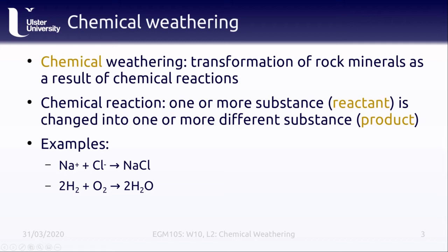Some examples: we have a sodium ion, chemical symbol Na, plus a chlorine ion, chemical symbol Cl, and these two ions react to form the compound sodium chloride, chemical symbol NaCl. These are laid out like a mathematical equation, with the reactants on the left-hand side and an arrow indicating the reaction that takes place. We also have the example of two hydrogen molecules combining with an oxygen molecule to form water molecules.